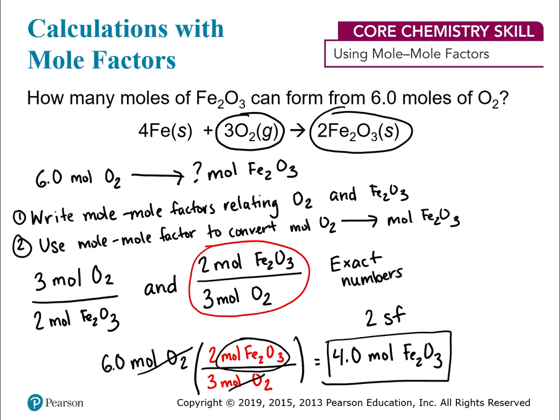If significant figures, scientific notation, or conversions from Chapters 1 and 2 make you uncomfortable, go back and revisit them — there's no harm in that. It'll help make Chapter 7 a little bit easier.